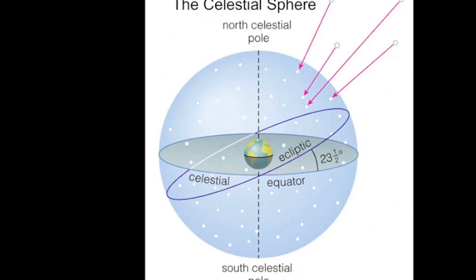For those of us living in the northern hemisphere, we can actually see the north celestial pole on any clear night. There just happens to be a star at this moment in time located on the sphere at the north celestial pole. You may know what the name of this star is — the north star, or Polaris.